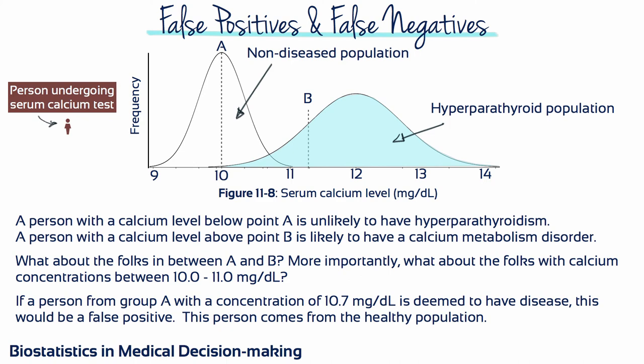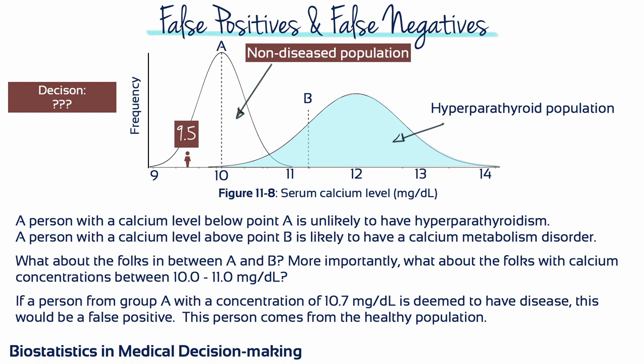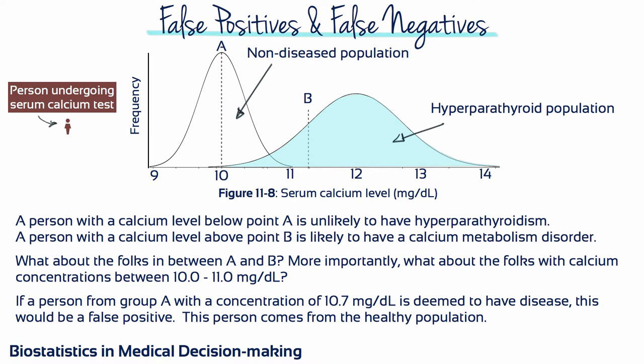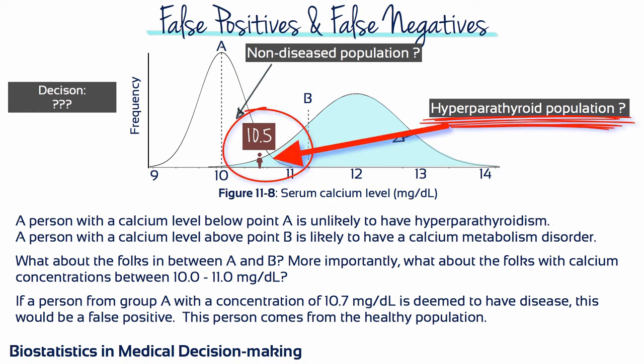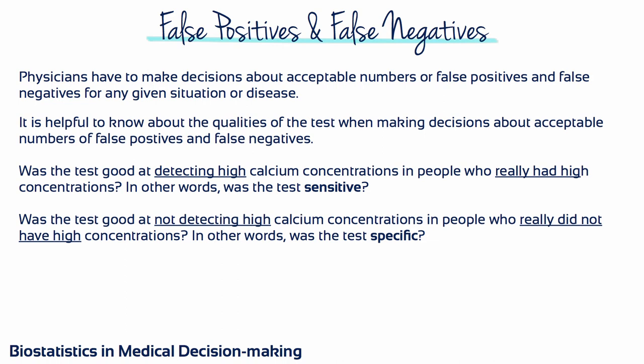Consider a person with a serum calcium concentration of 9.5 milligrams per deciliter — we could be pretty confident that person does not have hyperparathyroidism. Now consider a person with a serum calcium concentration of 10.5 milligrams per deciliter. If the person was really from the healthy population but we decided that he had hyperparathyroidism, we would be making a false positive. Physicians have to decide when false positives are acceptable, since patients with positive test results will have to undergo further testing and might be made anxious. They also have to decide whether a false negative would be dangerous, as failing to find some diseases when they actually exist could be dangerous.